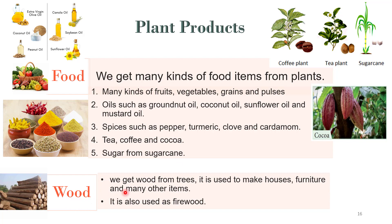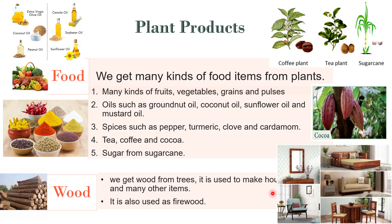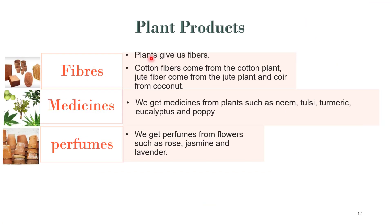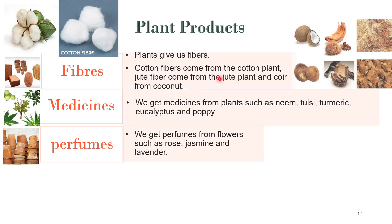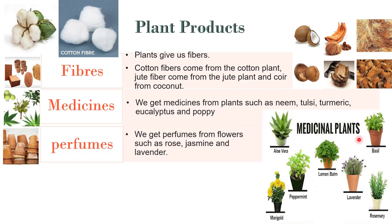The next product is wood, which we get from trees. It is used to make houses, furniture and many other items, and is also used for firewood. Plants also give us fibres — cotton fibres come from the cotton plant, jute fibres come from the jute plant, and coir comes from coconut. We also get medicines from plants such as neem, turmeric, eucalyptus and poppy.